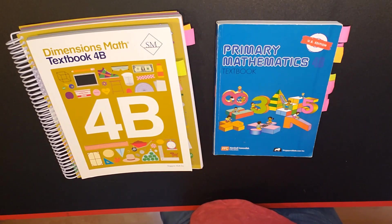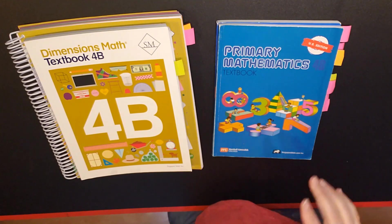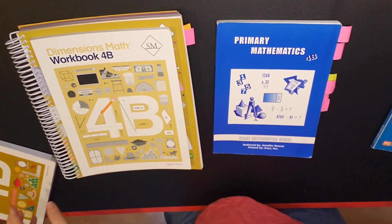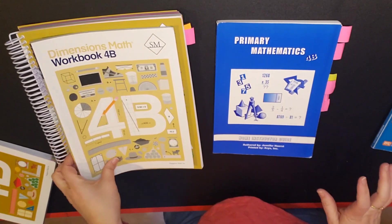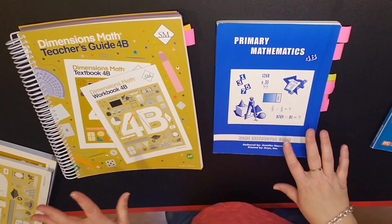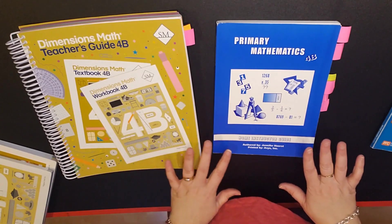First of all as you know Singapore has an A and a B for each year. So we will be looking at 4B. For each semester you will have a textbook and then you'll have a workbook, which I do not have the primary mathematics workbook, and then you will have a teacher's guide.